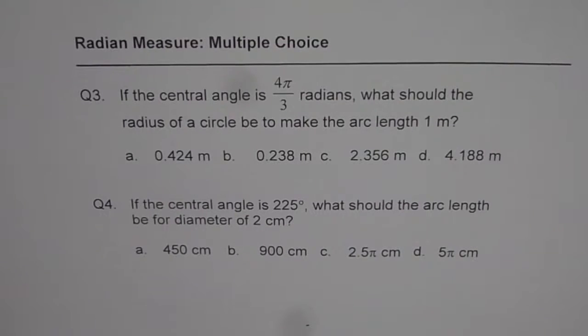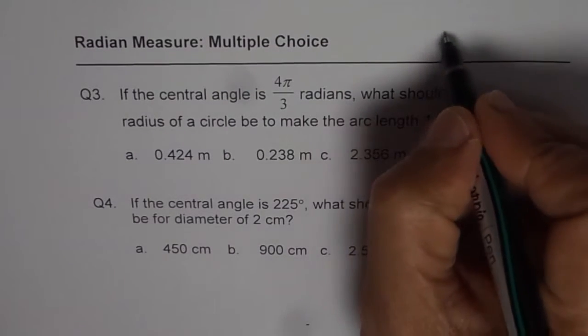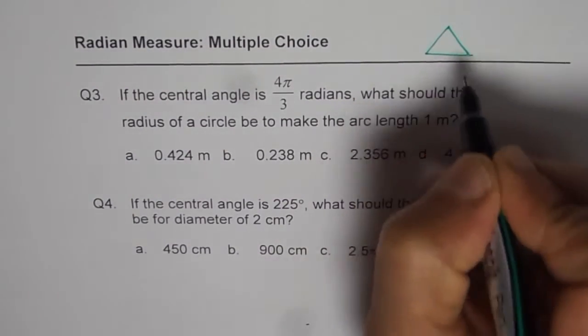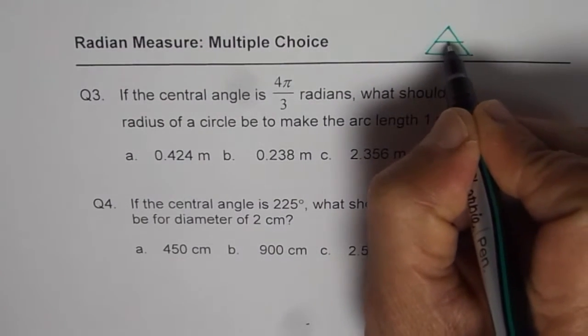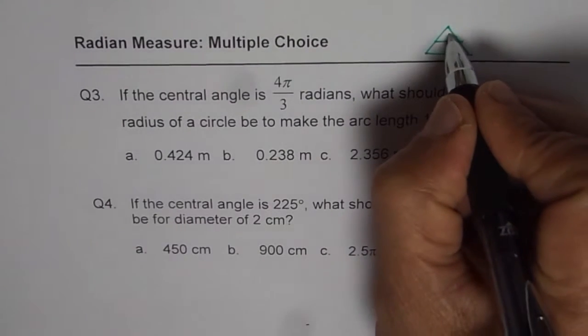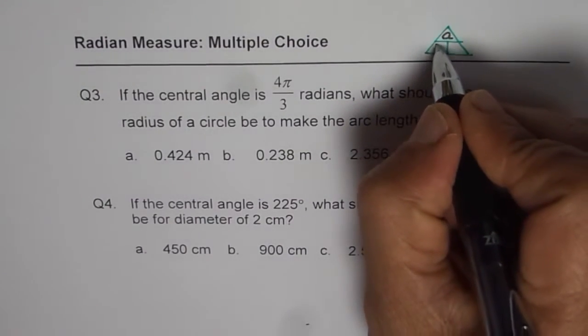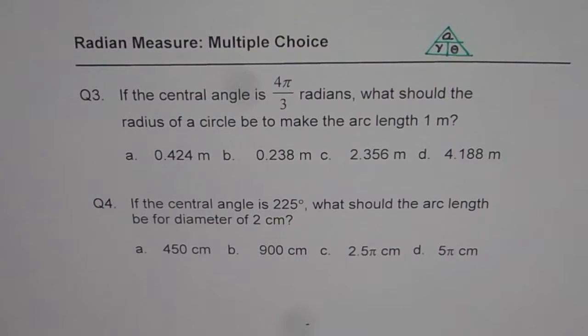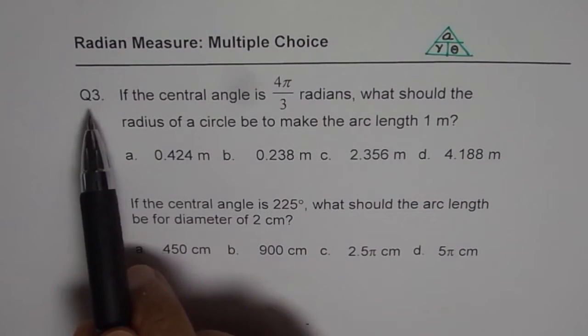I am Anil Kumar and here are some more questions on review of radian measure. Now these questions are related to A equals to R theta, that means arc length relation with radius of the circle and the angle. So we can always look into it with the help of this relation. The arc length equals to R times theta where theta is in radians. Now let's go through this question number 3.